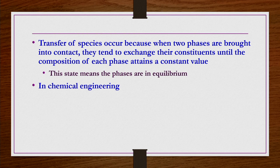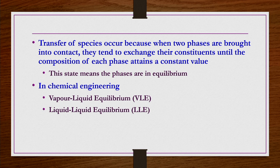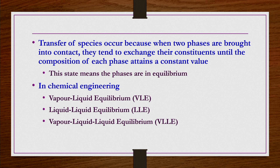In chemical engineering, the phase equilibrium problems can be generalized into several types: vapor-liquid equilibrium (VLE), liquid-liquid equilibrium (LLE), vapor-liquid-liquid equilibrium (VLLE) where one vapor and two liquid phases are in equilibrium, and solid-liquid equilibrium (SLE), and so on.